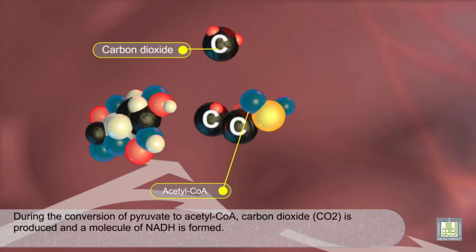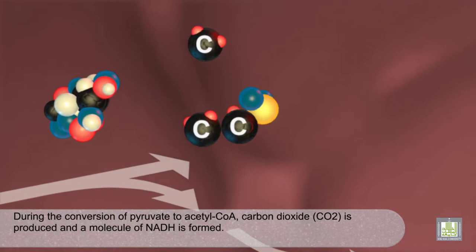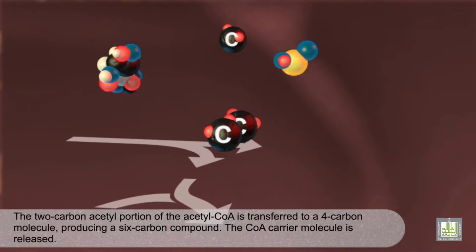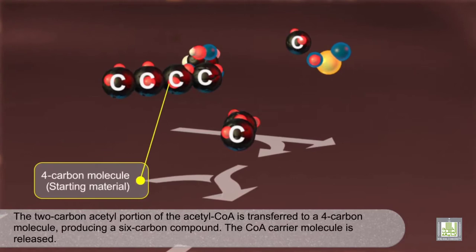During the conversion of pyruvate to acetyl-CoA, carbon dioxide (CO2) is produced and a molecule of NADH is formed. The two-carbon acetyl portion of the acetyl-CoA is transferred to a four-carbon molecule, producing a six-carbon compound. The CoA carrier molecule is released.